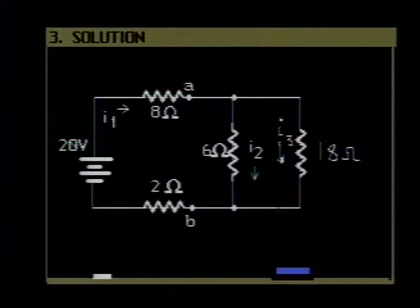We notice at this point that if we knew the potential difference between this point and this point, in other words, between points A and B, we would be able to use Ohm's Law to find both I2 and I3. We will come back to that later, but let's go on now with finding the equivalent resistance of our circuit.